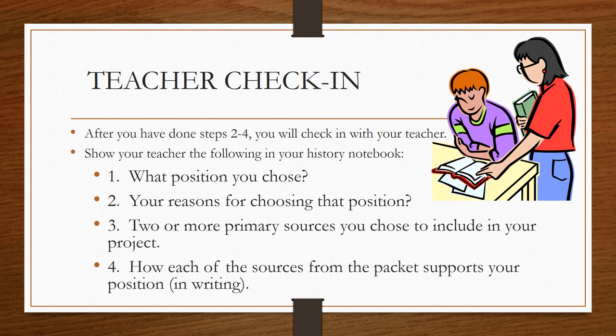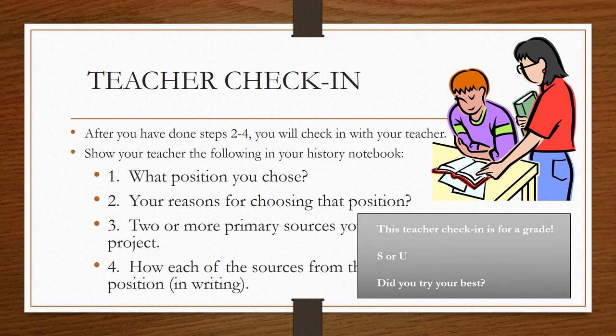When you show that to your teacher, your teacher will be grading it — an S for satisfactory or a U for unsatisfactory. He or she is also going to be looking to see if you tried your best. If you are unsatisfactory, we are going to have you go back and rework or redo one of these steps so that you can be successful with the remainder of your project.